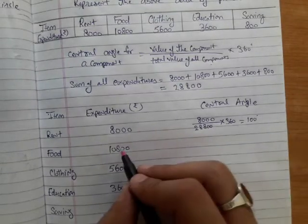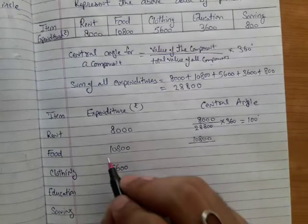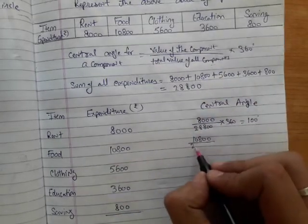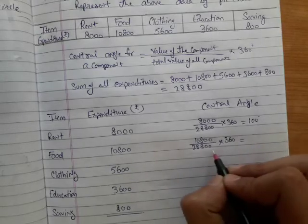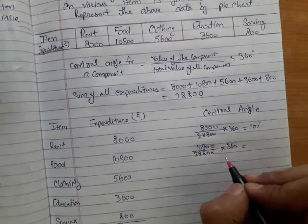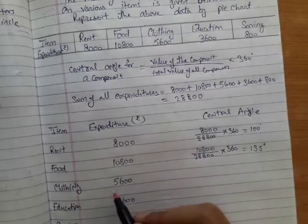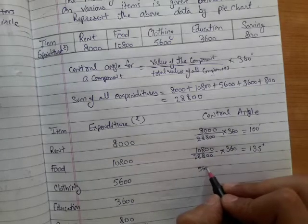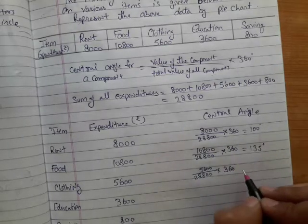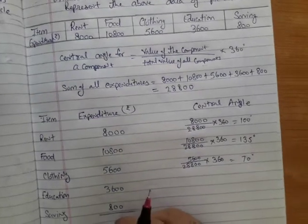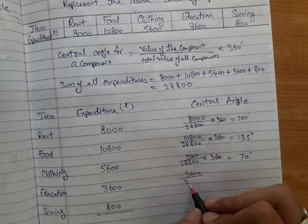The central angle for food is 135 degrees. Next, the central angle for clothing: expenditure on clothing is 5,600 divided by total expenditure 28,800, multiplied by 360 degrees, which gives 70 degrees. For education: expenditure is 3,600 divided by 28,800, multiplied by 360 degrees.